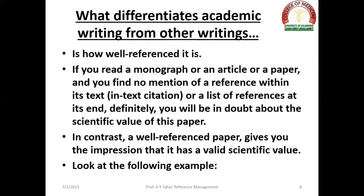What differentiates academic writing from other writings? What differentiates academic writing is how well referenced it is. If you read a monograph, article, or paper and find no in-text citation or list of references at the end, you will be in doubt about its scientific value. In contrast, a well-referenced paper gives the impression that it has valid scientific value. Look at the following example.